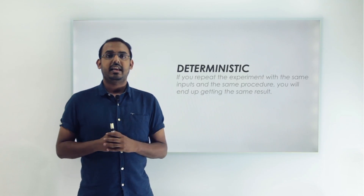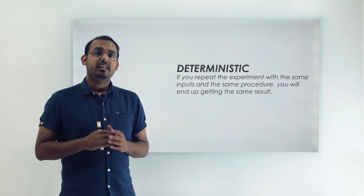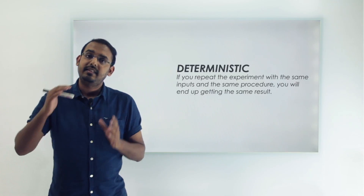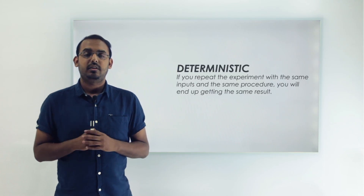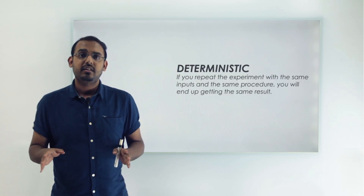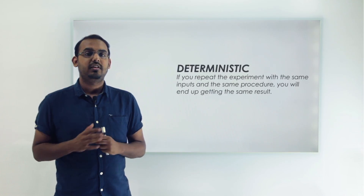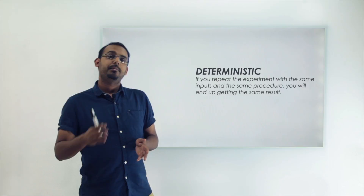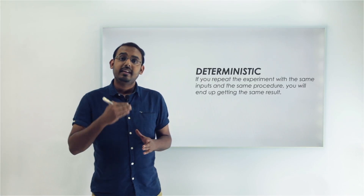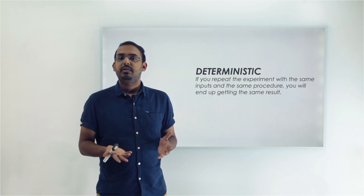A deterministic experiment is one where if we repeat the same set of steps with the same exact inputs, we will always end up with the same result. For example, if I throw a stone up in the air it will always come back to the ground. Similarly, in science lab experiments, giving the same inputs following the same steps always yields the same result.